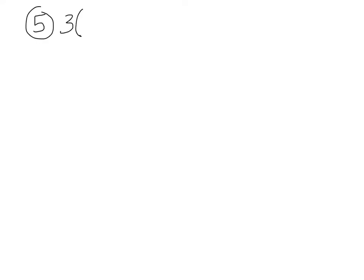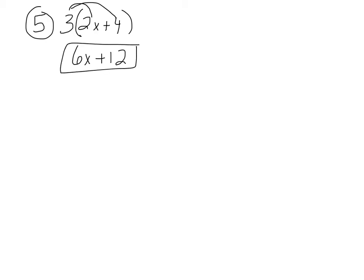The next topic is distributive property. The distributive property is when you take something outside and multiply it by everything inside a set of parentheses. For example: 3 times the quantity 2x plus 4. You distribute 3 times 2x, which is 6x, and 3 times 4, which is 12. So the answer is 6x plus 12.